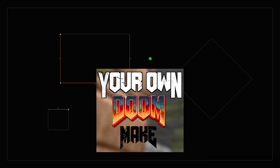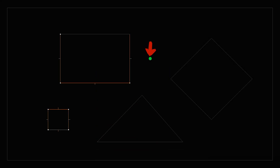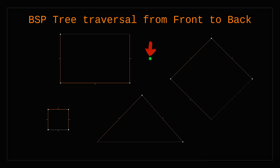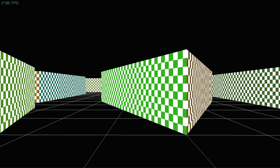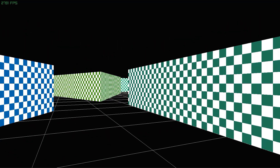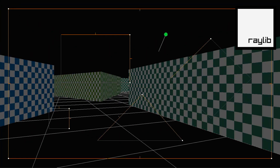Earlier we learned how to build an optimal binary space partitioning tree and figured out how to traverse this tree from front to back. If you're already making your own Doom-style shooter but are a bit stuck, this video will explain how we can use our 2D tree to create a 3D level using the Raylib library.